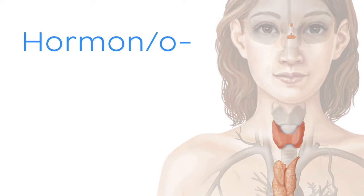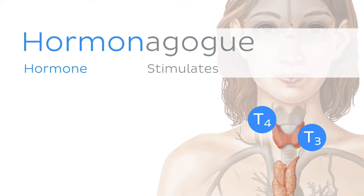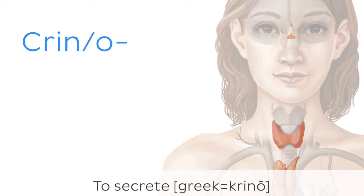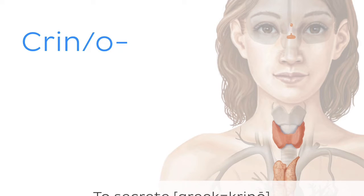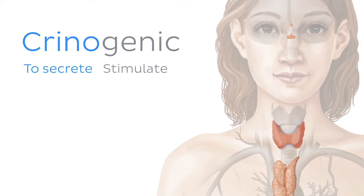The root associated with hormones is simply hormon or hormono. You'll see it used, for example, in hormonagog, an agent that increases the production of a hormone. Speaking of secretion of hormones, we have the root crin or crino, which means just that — secrete. An example of it in use could be the term crinogenic, which refers to an agent which stimulates a gland into secretion.